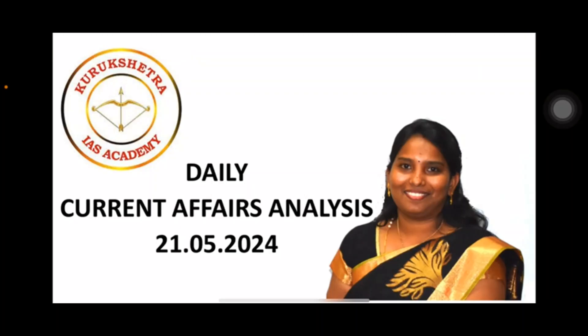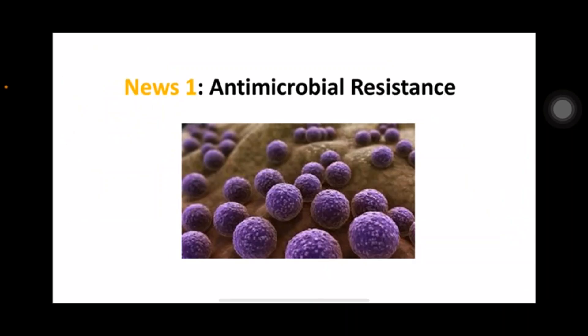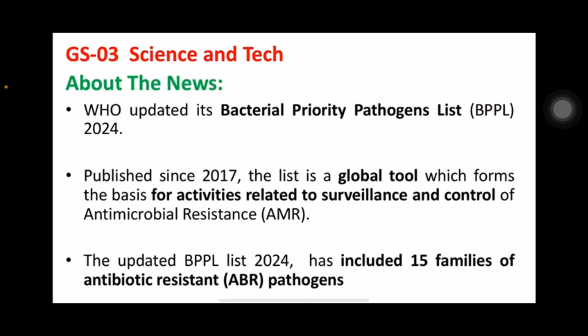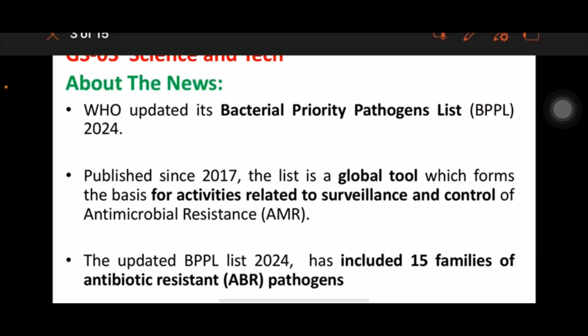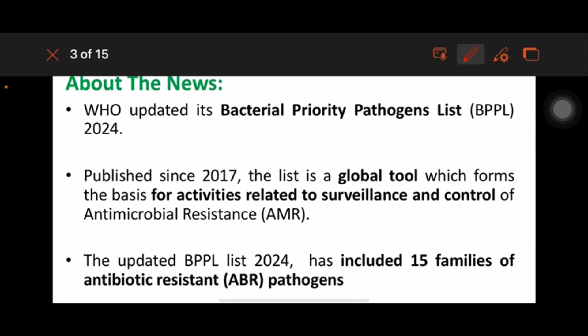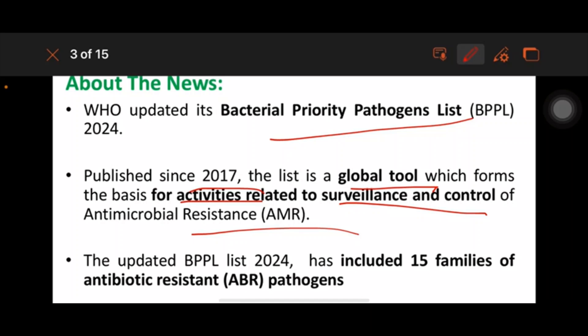Good morning dear aspirants. Today's news: Antimicrobial Resistance, which comes under GS3 Science and Tech. The WHO updated its Bacterial Priority Pathogen List, published since 2017. This list is a global tool that forms the basis for activities related to surveillance and control of antimicrobial resistance, and it includes 15 families of antibiotic-resistant pathogens.